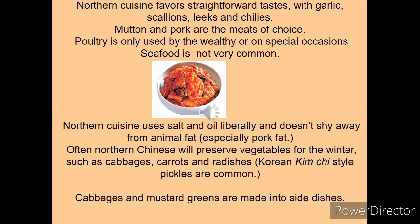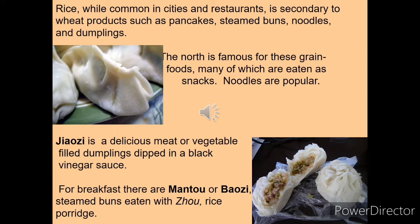Northern Chinese chefs use seasoning to add richness to dishes without covering up the natural flavor of the ingredients. Most northern cuisine ingredients are based on regional agricultural products, which are limited due to the cold and dry weather. Wheat is the staple crop of northern China, and wheat flour products in the form of noodles, dumplings, steamed buns, stuffed buns and pancakes are widely available. Rice is also eaten in the north but is secondary to wheat. Dumplings are very popular, served with vinegar and hot chili oil for dipping.